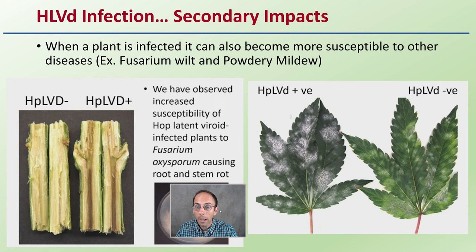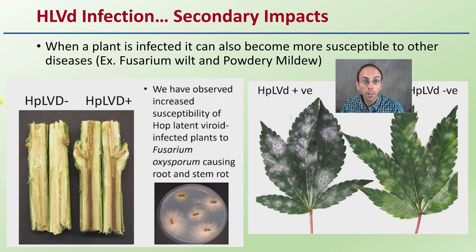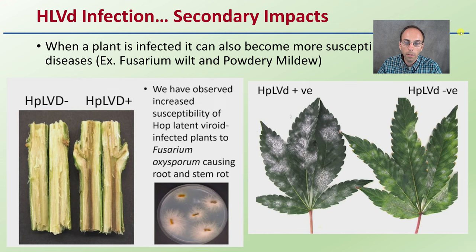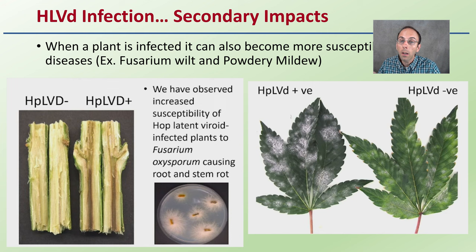The viroid can also have secondary impacts. A plant that's infected can become more susceptible to other diseases, particularly fusarium wilt and powdery mildew. Images from a linked researcher show that while both leaves may have powdery mildew, one clearly has it more severe — the one testing positive for Hop Latent Viroid versus the negative. The same pattern is observed with fusarium, which is a root-based disease that then infects the xylem of the stem tissue.